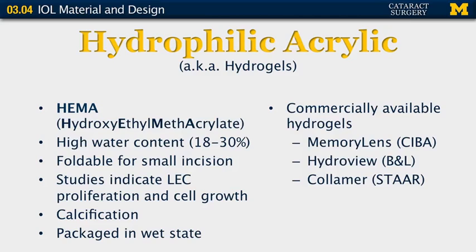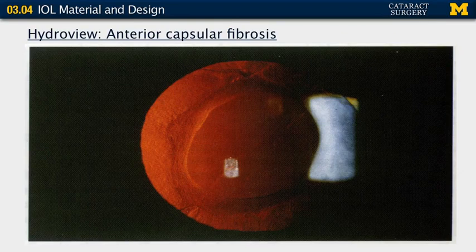Hydrophilic acrylic lenses are also known as the hydrogels. They are made of hydroxyethyl methacrylate. They have a high water content and therefore tend to be packaged in the wet state rather than dry. They are also foldable for small incision use. Studies do indicate that they have a higher rate of lens epithelial cell proliferation and cell growth, meaning that you have a higher rate of needing a YAG laser capsulotomy later on. They also have an unusual quality in that some of these have been known to calcify in vivo in patients, so much so that they need to be explanted and replaced with a different lens. There are several commonly available hydrogels — the Memory Lens, HydroView, and Colomer are some of the frequently used lenses in the United States. We have a slide here showing opacification and capsular phimosis and fibrosis associated with this type of lens.